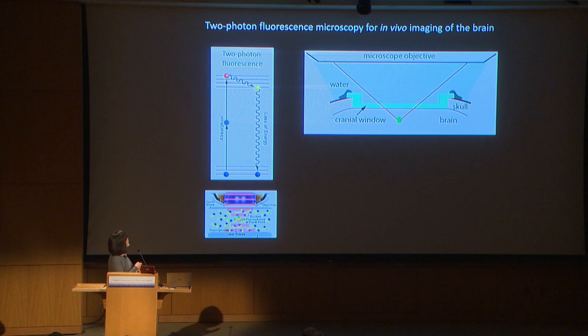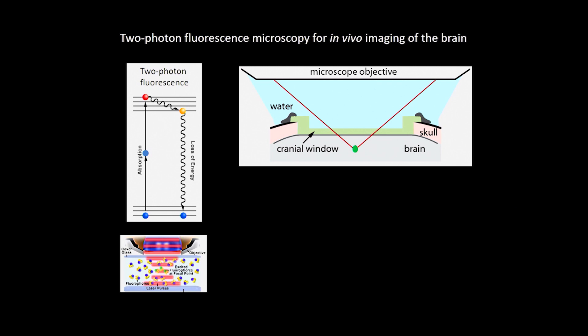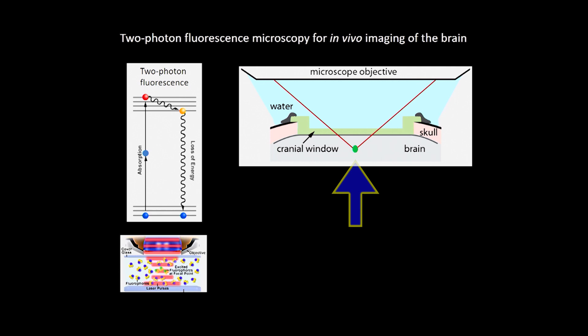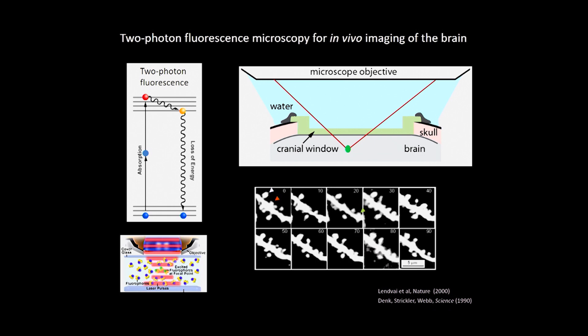One technique that has been around for many years and is very powerful in this regard is two-photon fluorescence microscopy. This microscopy relies on the excitation of a fluorescent molecule by the simultaneous absorption of two photons. When the molecule returns to the ground state, it releases energy in the form of a fluorescent photon. The fluorescent signal is only generated at the focus of the excitation laser, so to form an image you scan this focus around inside the brain and collect the fluorescent signal at each position, generating a 2D raster plot — a micrograph of the fluorescent molecule distribution.